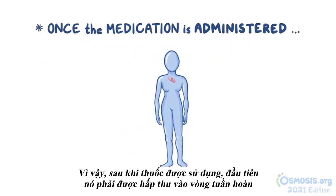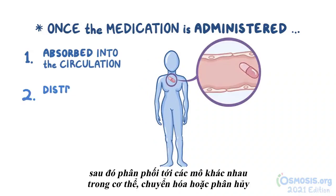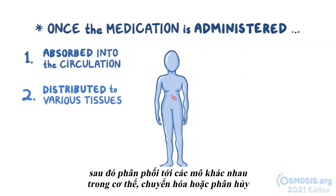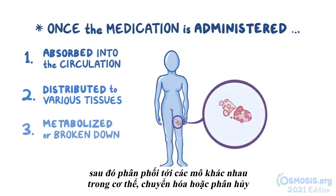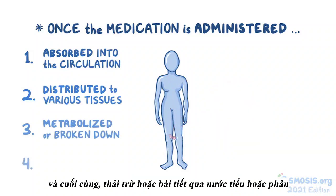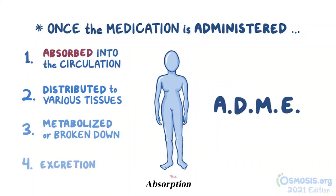Once the medication is administered, it first has to be absorbed into the circulation, then distributed to various tissues throughout the body, metabolized or broken down, and finally eliminated or excreted in the urine or feces. You can remember this as ADME: absorption, distribution, metabolism, and excretion.